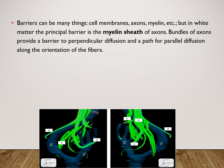But in white matter, the principal barrier is the myelin sheath of axons. Bundles of axons provide a barrier to perpendicular diffusion and a path for parallel diffusion along the orientation of the fibers. So along the orientation of fibers it will form a path, while perpendicular to it, it will form a barrier because of the myelin sheath.